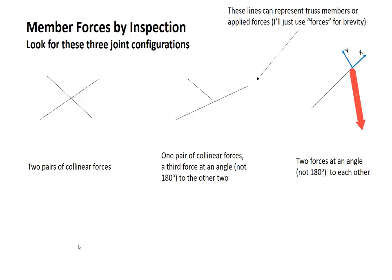We know then that by equilibrium in the y direction, that force is zero. If we look in the x direction, there's only one additional force. Equilibrium in the x direction says that that one remaining force has to be zero. So in the case of two forces at an angle to each other, both forces are zero.